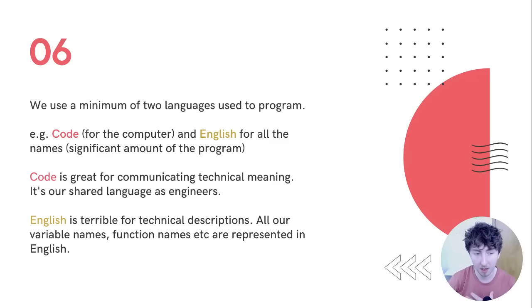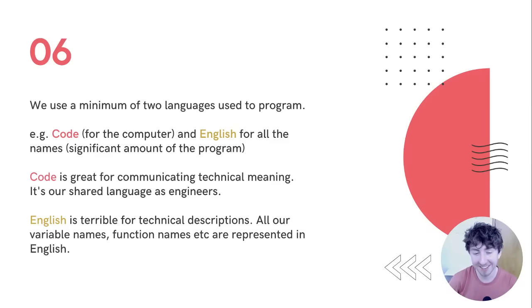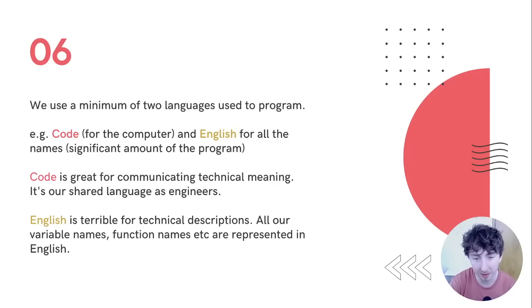Code is actually really great for communicating technical meaning — it's the shared language we all have as developers. We can read the same code and understand it. The problem is that English is really poor at describing technical things, and that's a problem because all of our variable names, function names, and so on are all represented in English.